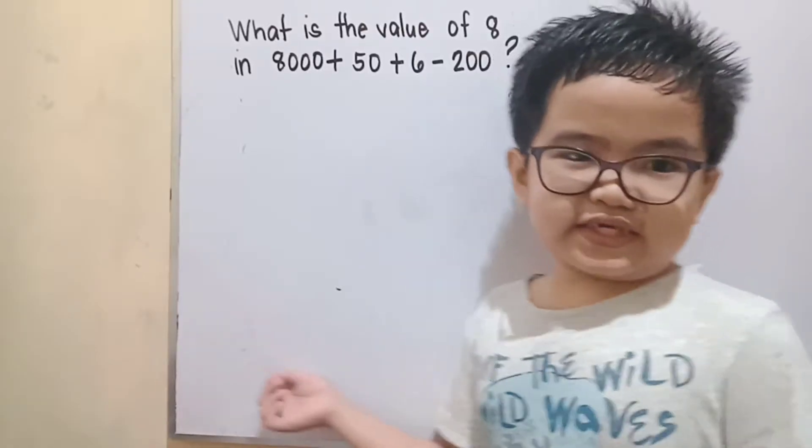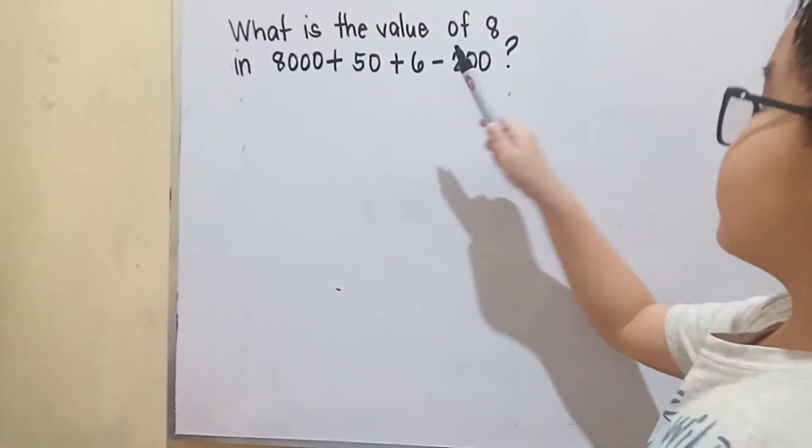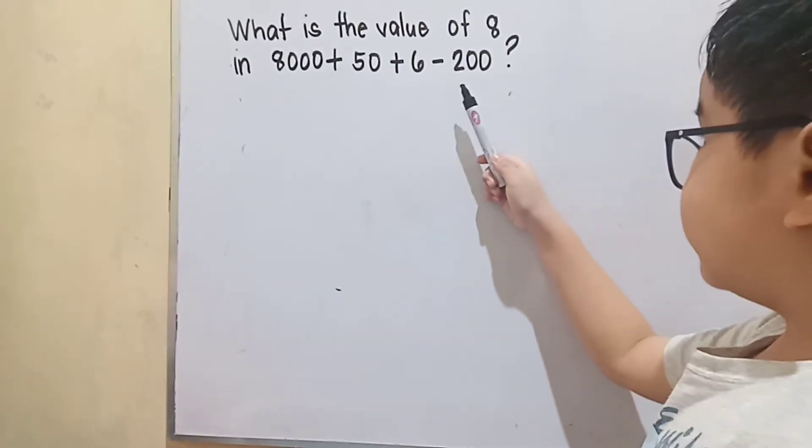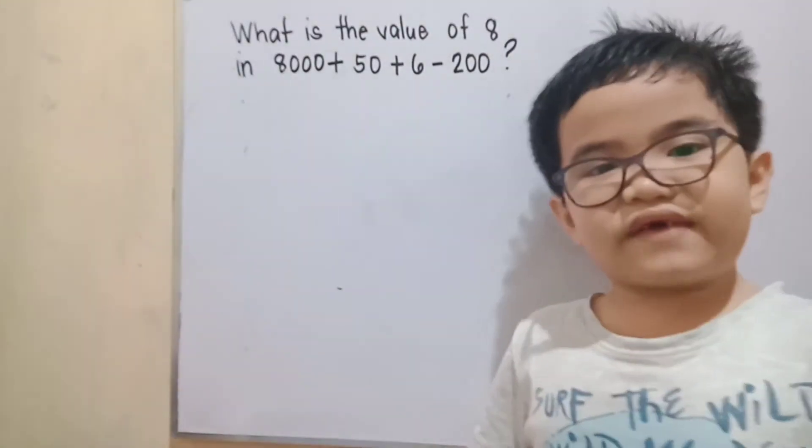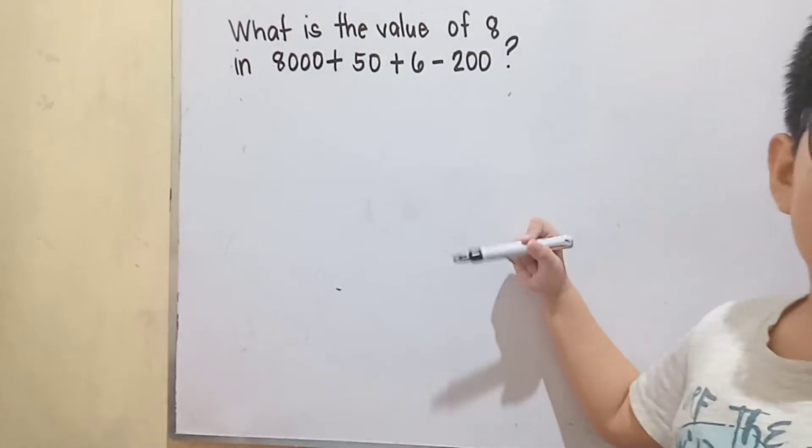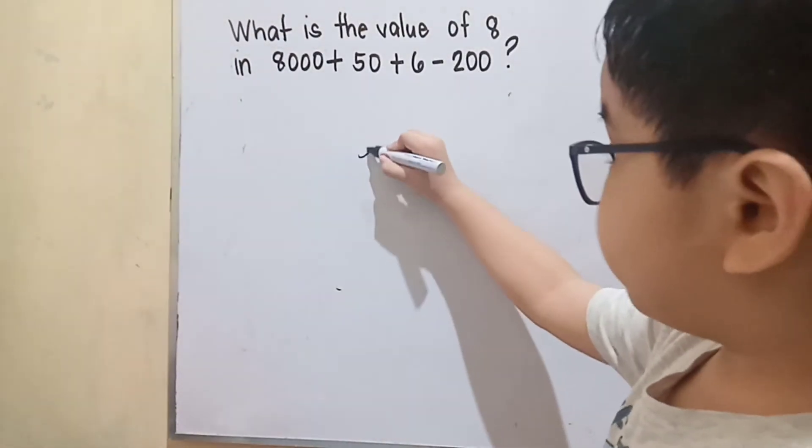Now this is the second problem: What is the value of 8 in 8,000 + 50 + 6 - 200? Come on, let's solve it. To solve this problem, first we will get the sum of 8,000, 50, and 6.